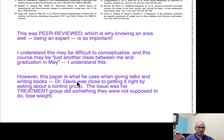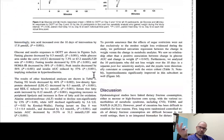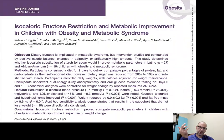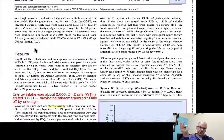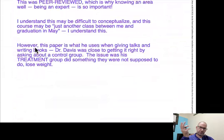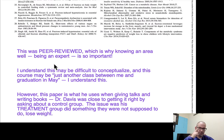This paper is what Dr. Lustig uses. He's a physician that has been opposed to sugar and calls it toxic. But, this is what was used when giving talks and writing books. Dr. Davis was close to getting it right by asking about a control group, because there wasn't a control group. Maybe the control group had a different experience than the group that received the weight loss.